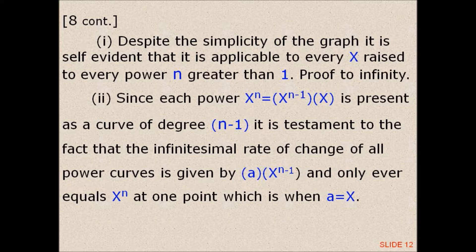Since each power X to the power n equals X to the power n minus 1 times X, present as a curve of degree n minus 1, it is testament to the fact that the infinitesimal rate of change of all power curves is given by n times X to the power n minus 1, and only equals X to the power n at one point, which is when n equals X.